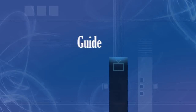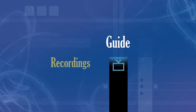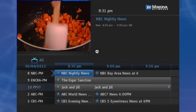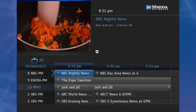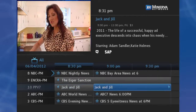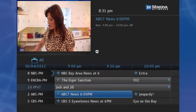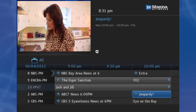If your set-top box does not support recording, you can contact customer service for an upgrade. For recording future airing programs, follow these three steps. Step 1: Find the program you want, highlight its listing in the guide, and press OK.